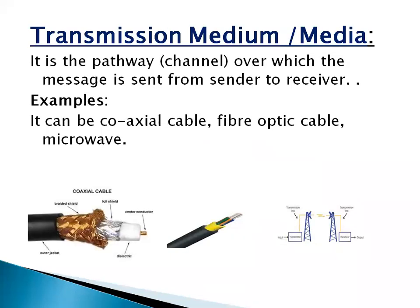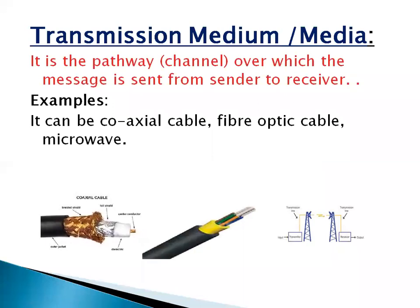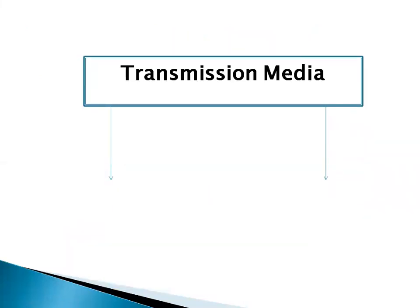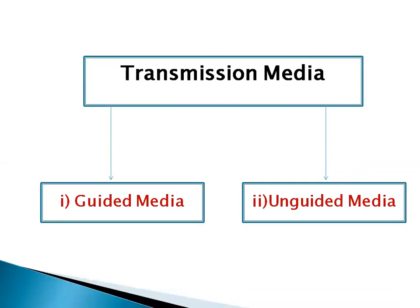Let's have a look at transmission medium or media. It is the pathway or channel over which the message is sent from sender to receiver. It can be a coaxial cable, it can be a fiber optic, or it can be a microwave. There are two types of transmission medium: Number 1, Guided Media; Number 2, Unguided Media.